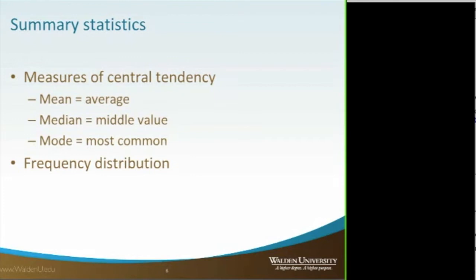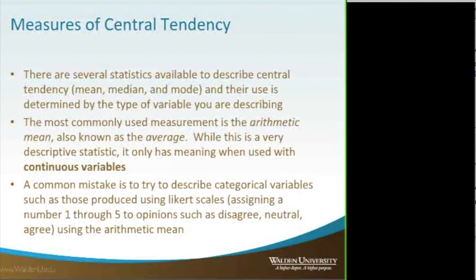We generally have what we call summary statistics, and we start with measures of central tendency. The most common are the mean or the average, the median — which is the middle value — and the mode, which is the most common value. We also have frequency distributions for discrete statistics rather than central tendency. The most commonly used measure is the mean or the average.